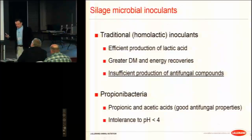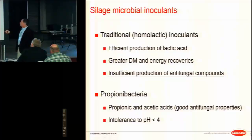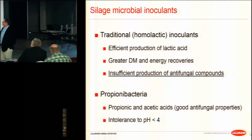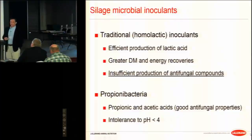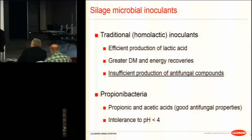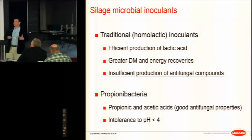I've been talking about traditional homofermentative inoculants, characterized by efficient production of lactic acid and greater dry matter and energy recoveries. However, there is a potential setback: insufficient production of antifungal compounds. We get a lot of lactic acid, yes, but lactic acid does not have good antifungal properties. In fact, spoilage yeast can start the deterioration process by using that lactic acid - so it's kind of a catch-22.